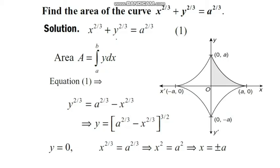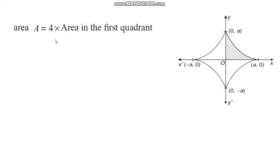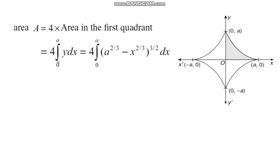According to curve tracing, the curve is symmetric with respect to both axes, and the area in the first quadrant is the same as the area in the second, third, and fourth quadrants respectively. Therefore, the areas in all four quadrants are equal. The total area of the astroid equals four times the area in the first quadrant.